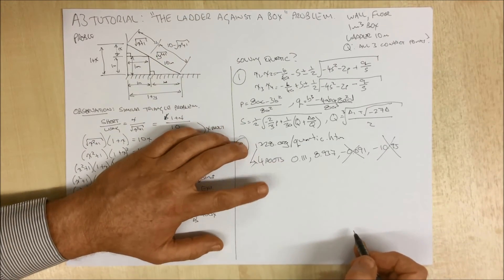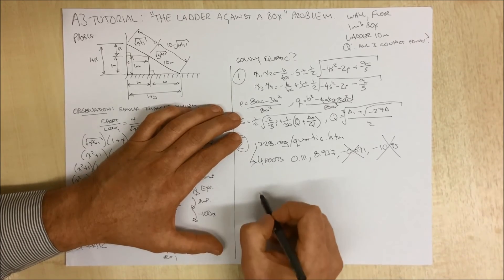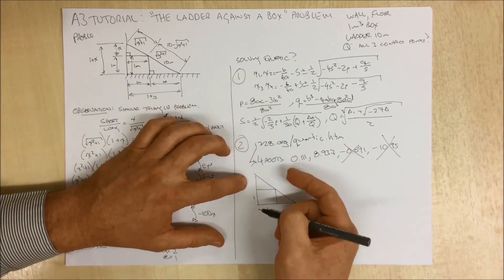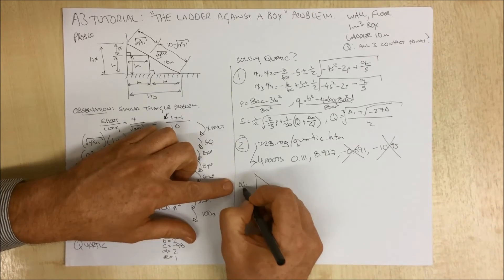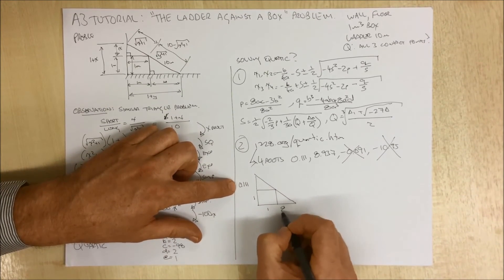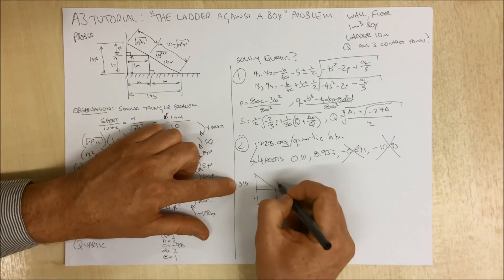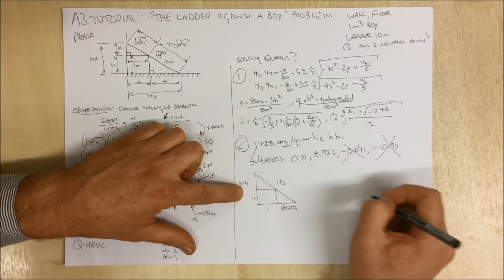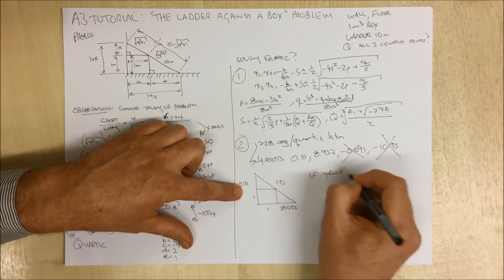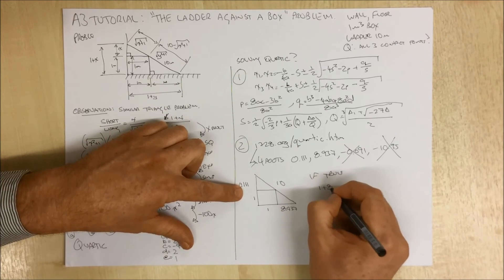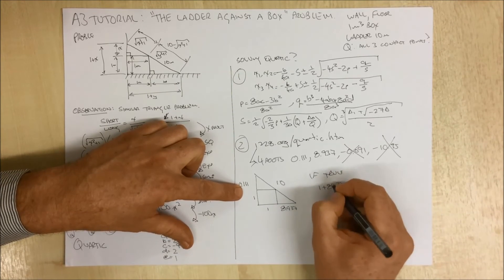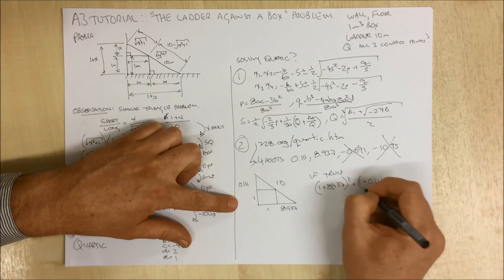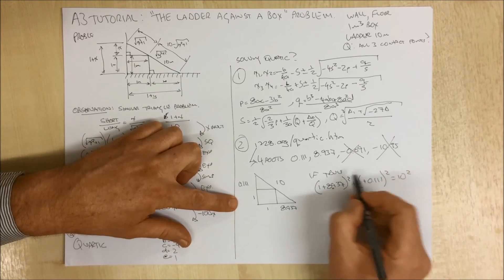So if we think about these two roots and think about what our problem was, our problem back up here. And this is telling us that this height here is 0.111 and 8.937. And we know that that's 10. So we can prove if this is going to work. And again we come back to Pythagoras.